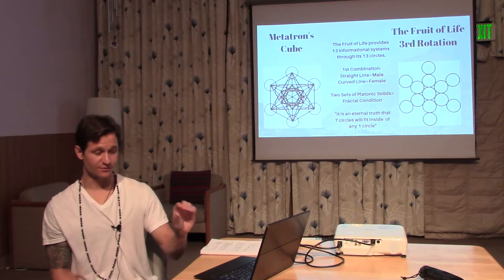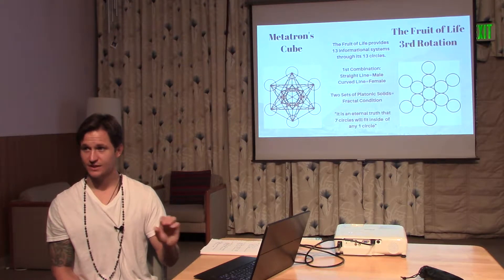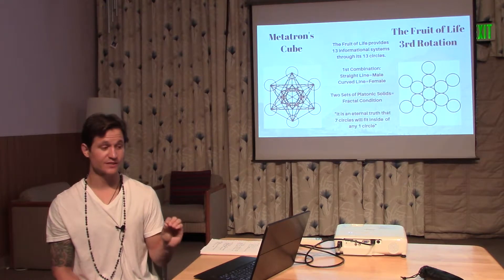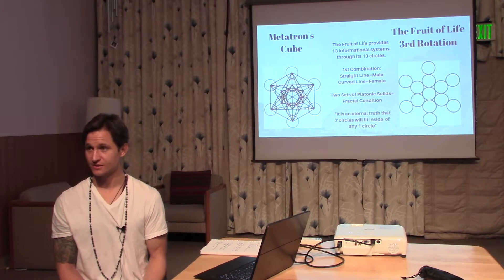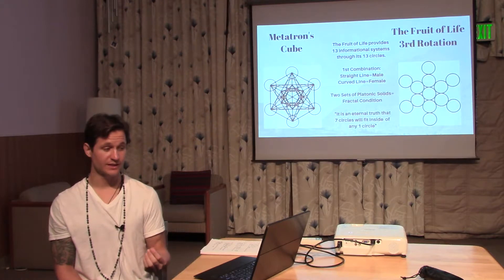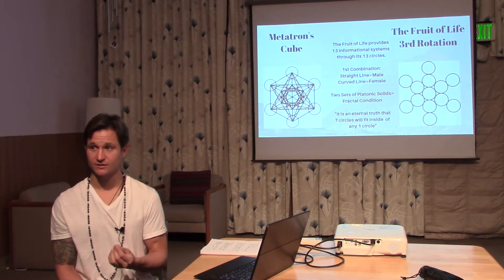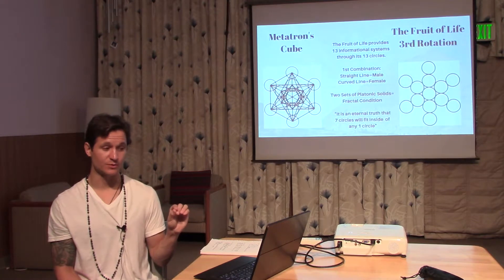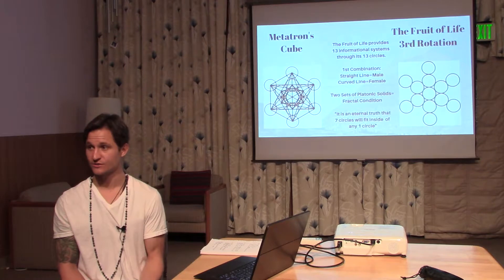The fruit of life structure is 13 circles that can be interpreted 13 different ways, and it gives us 13 different informational systems. The first one is the most simple because it combines male and female energy. You draw a straight line between the center of every circle to every other circle, and that creates Metatron's cube.